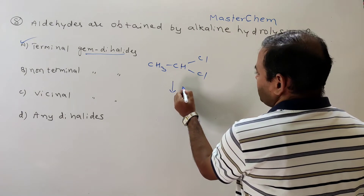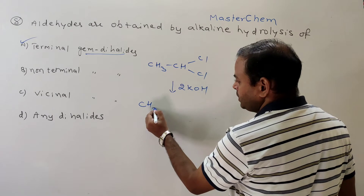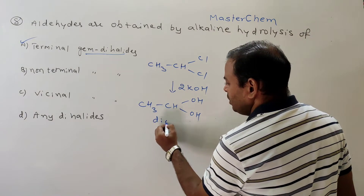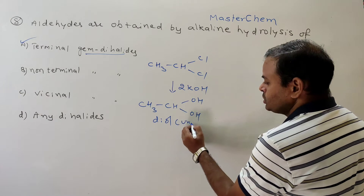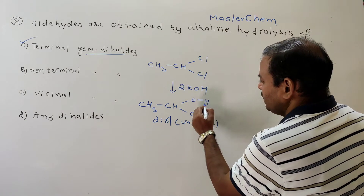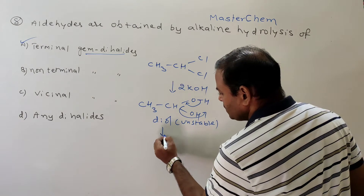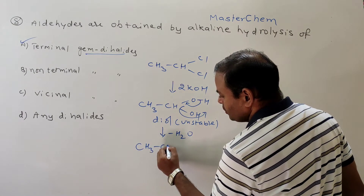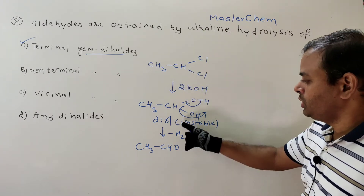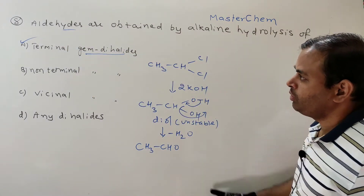This terminal gem dihalide undergoes alkaline hydrolysis using KOH, which substitutes two chlorines with two OH groups to give CH₃CH(OH)₂ — a diol. This diol is unstable because two OH groups are on the same carbon. Loss of H₂O takes place, and it leads to the formation of CH₃CHO — acetaldehyde. So whenever the two halogens are at a terminal position, aldehyde preparation is possible.